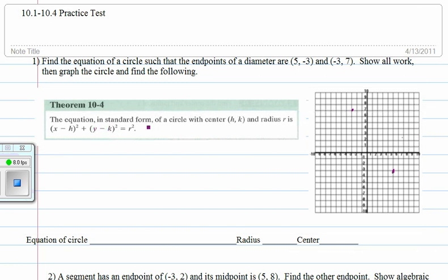And in order to find an equation of a circle, we need its center, which we call h, k, or the coordinates of it. And we need the radius, which we call r. Once we have those two, then we put them in here.